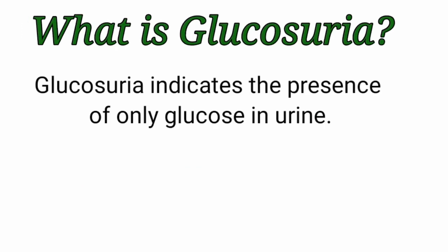What is Glucosuria? Glucosuria indicates the presence of only glucose in urine. This term is used specifically to represent the excretion of glucose. When representing the excretion of fructose in the urine, we call it fructosuria. Similarly, representing the excretion of galactose in the urine, it is called galactosuria.